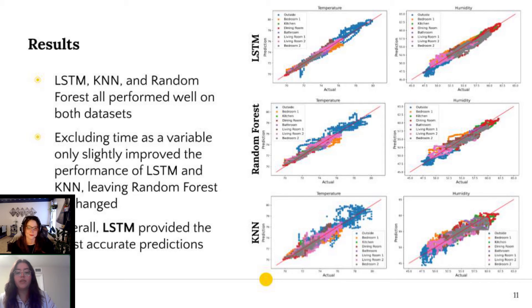What we found in our experimentation was that all three of our algorithms performed well at predicting temperature and humidity when given either dataset. We only saw slight improvements in LSTM and KNN when excluding time as an input, and random forests remained unchanged. Overall, LSTM provided us with the most accurate predictions, which we can see represented in the graph to the right.